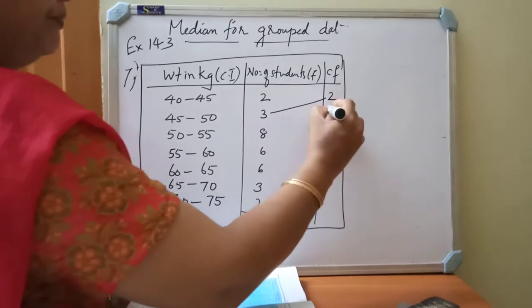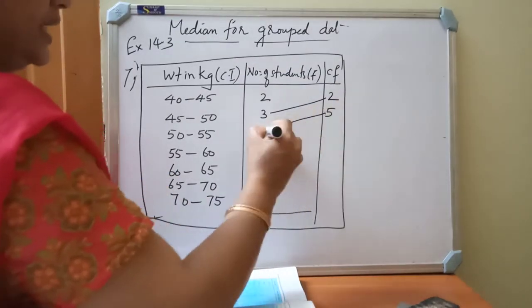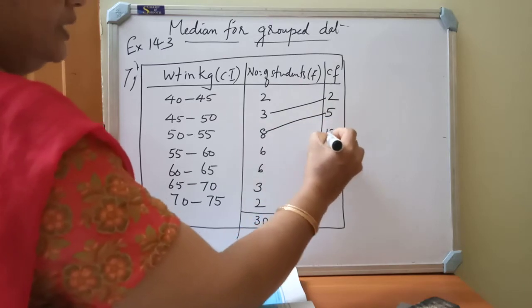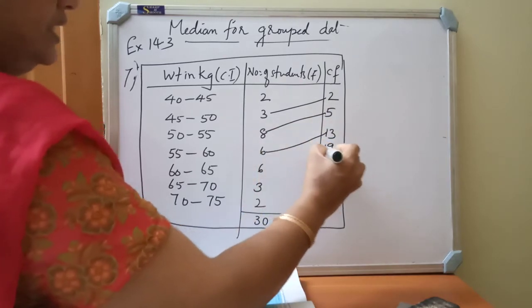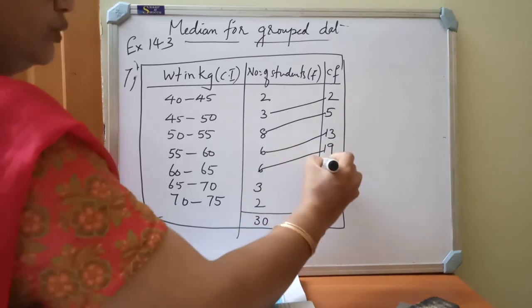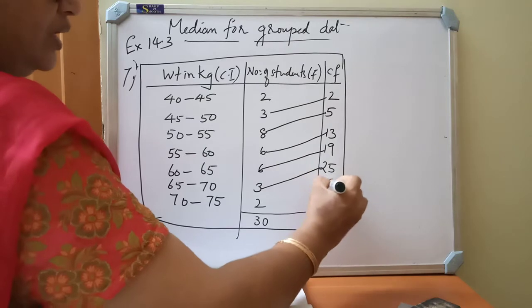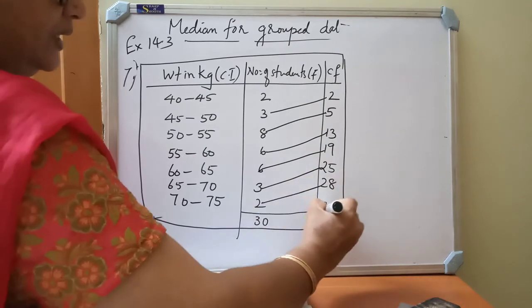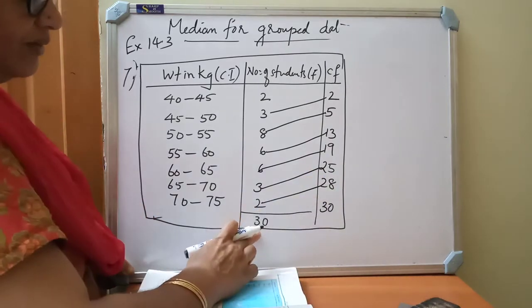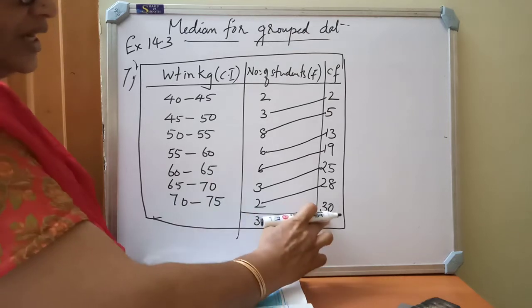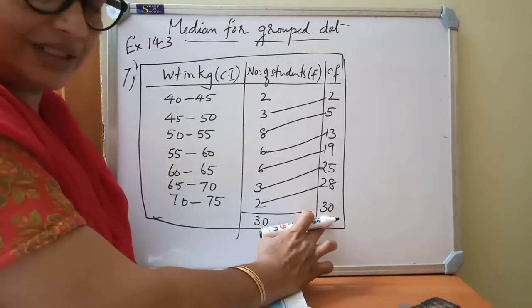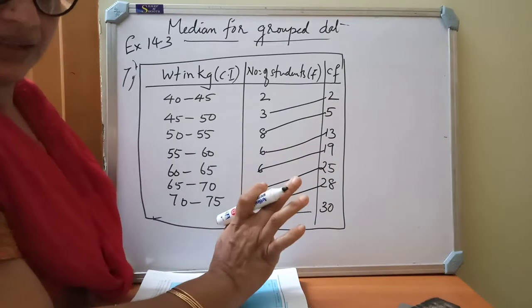Then 2 plus 3, 5. 5 plus 8, 13. 13 plus 6, 19. 19 plus 6, 25. 25 plus 3, 28. 28 plus 2, 30. So see that, our total value they are given as 30, here also cumulative frequency's last value we got as 30. So our addition is correct.